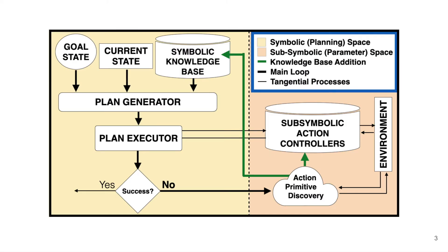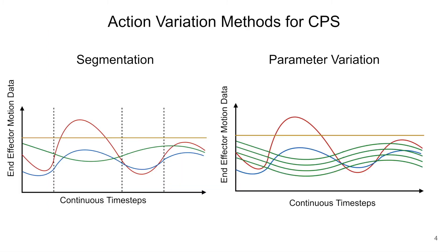We perform creative problem solving through action discovery combining two levels of abstraction. In symbolic planning space, the agent tries to reach a goal state using its original symbolic knowledge base. When the planned executor fails, either during execution or fails to achieve the goal state, we enter sub-symbolic parameter space, in which the agent performs action primitive discovery through interaction with the environment to expand the capabilities of the agent and update the symbolic knowledge base.